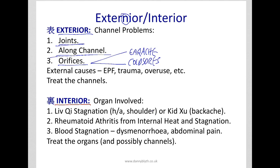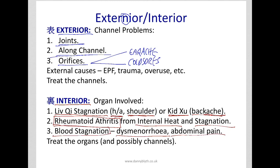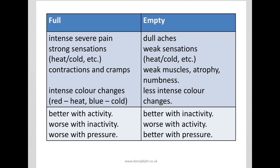Some interior problems can give channel problems. For example, liver qi stagnation can give headache, shoulder tension, and jaw pain, and kidney deficiency can give backache. We also see things like rheumatoid arthritis which are actually from internal heat and stagnation, and things like period pain caused by blood stagnation. In these cases we're going to treat internally, and that's not what we're talking about right now.